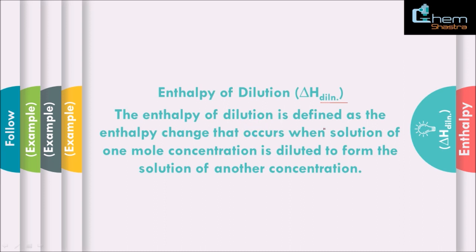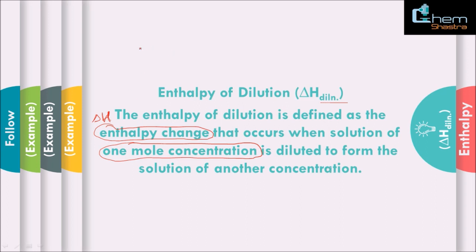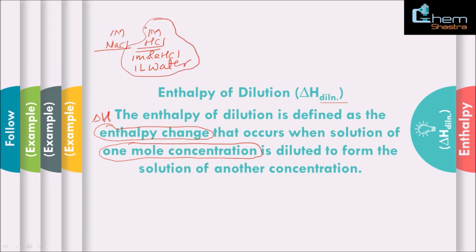The enthalpy of dilution is defined as the enthalpy change — delta H — that occurs when a solution of one concentration is diluted to form a solution of another concentration. For example, suppose you have a one molar HCl solution — that is, one mole of HCl dissolved in one liter of water. Here HCl is our solute and H2O is the solvent. When these two are mixed, a solution is made, and the enthalpy change associated with that is called the enthalpy of solution, which we discussed in the previous video.